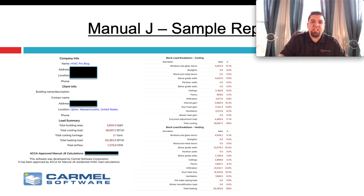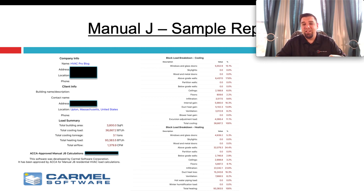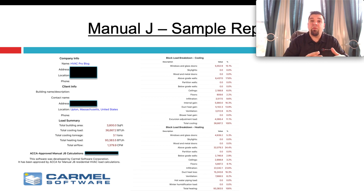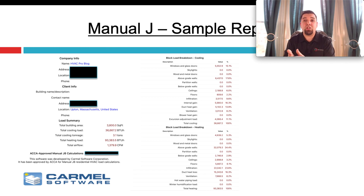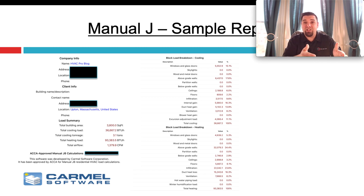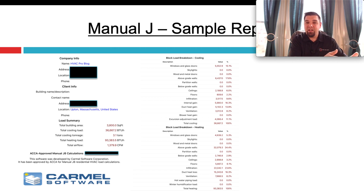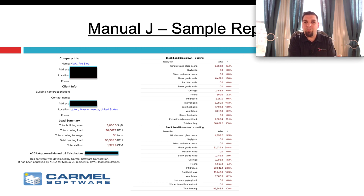Also check things like partition walls — for example, if the space borders a garage, which is unconditioned even though it's not outdoors, you need to account for that partition wall. I have zero for partition walls because I don't have a garage or unconditioned spaces. Take a look at ceilings, floors, and infiltration — all the things we talked about in the site survey form. On the heating side, you can see I need about a three-ton system for cooling and somewhere around 90,000 BTUs for heating. I've changed the leakage settings and it didn't significantly change equipment size, as we discussed — though drastically misrepresenting it, like calling it tight when it's really semi-loose, could change the result significantly.